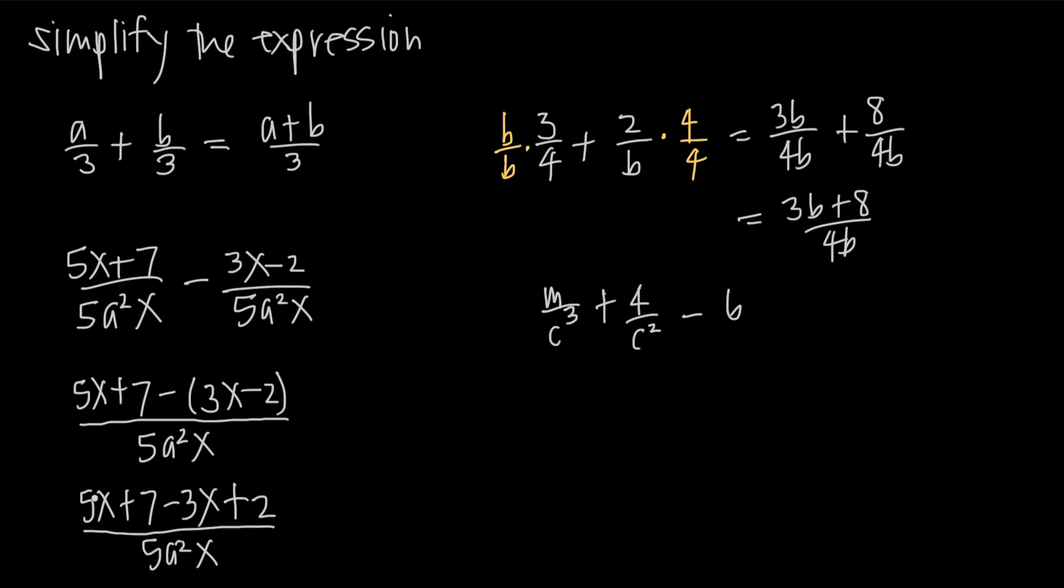Now we just need to make sure that we can't combine like terms. In this problem, we actually can. We have 5x-3x is going to be 2x—remember, 5 of them minus 3 of them is 2 of them. So I have 2x and we have whole numbers we can combine. Positive 7 and a positive 2 is a positive 9, so we get (2x+9)/(5a²x) as our answer.